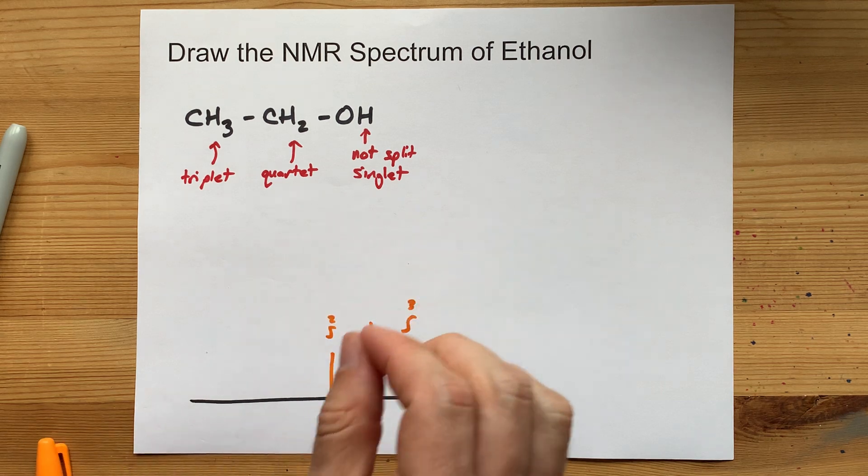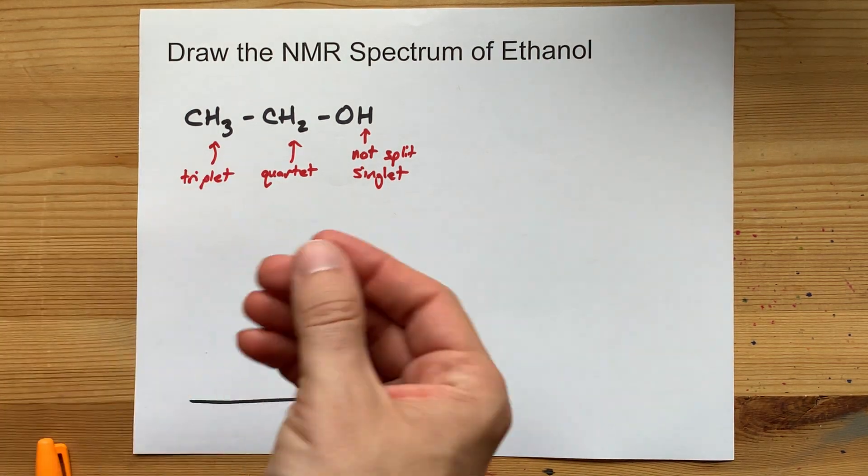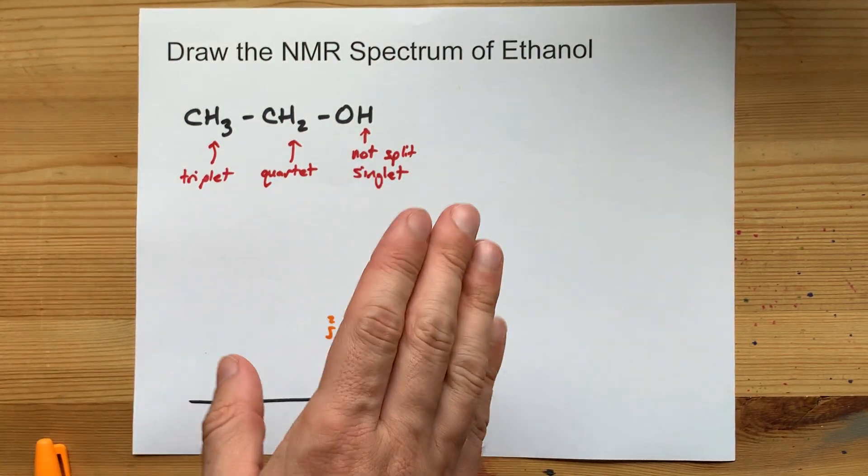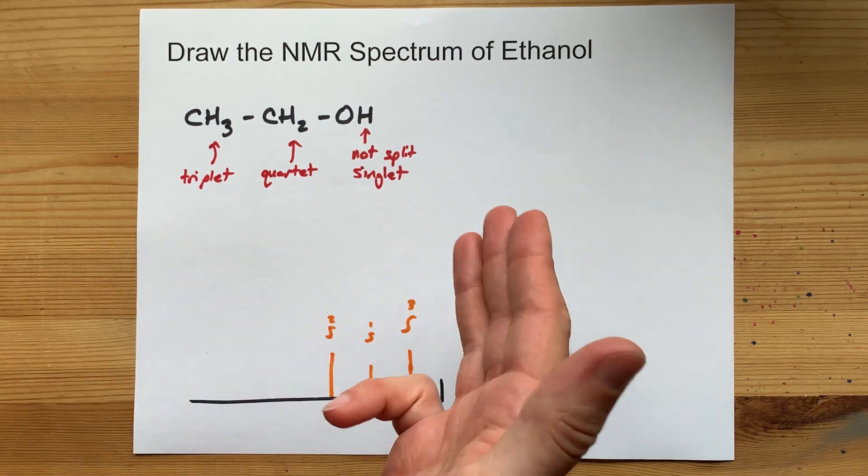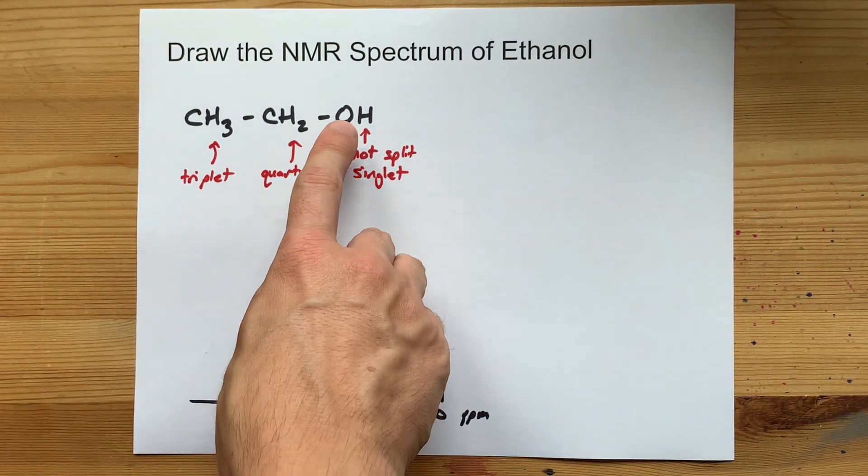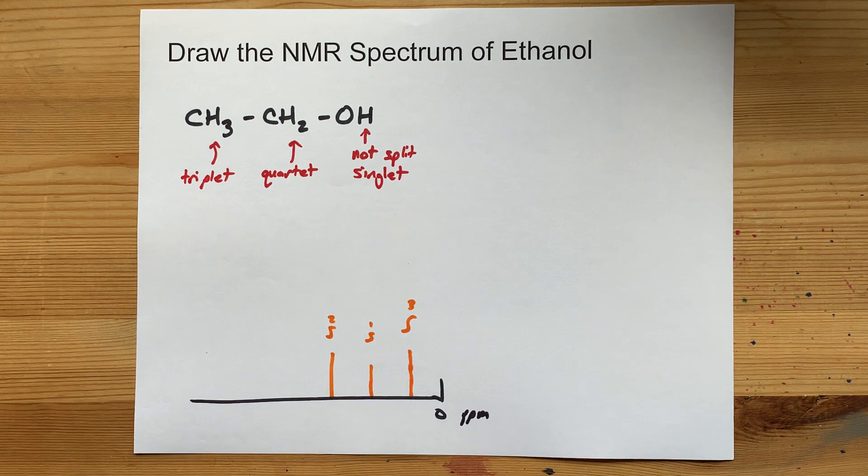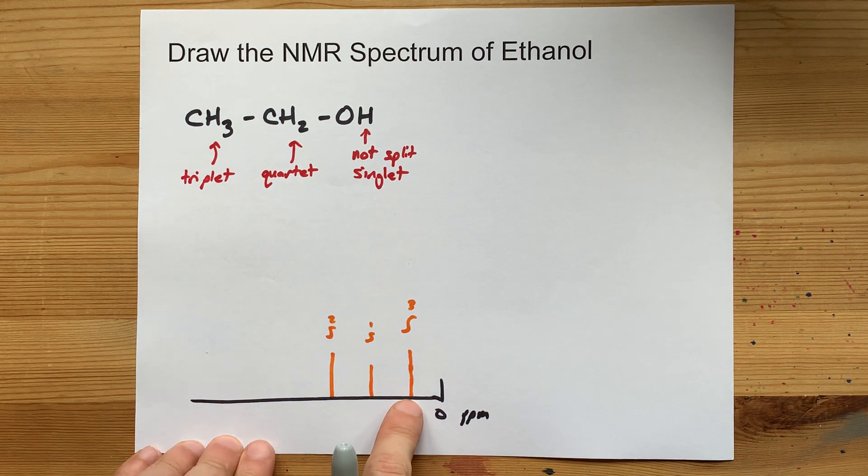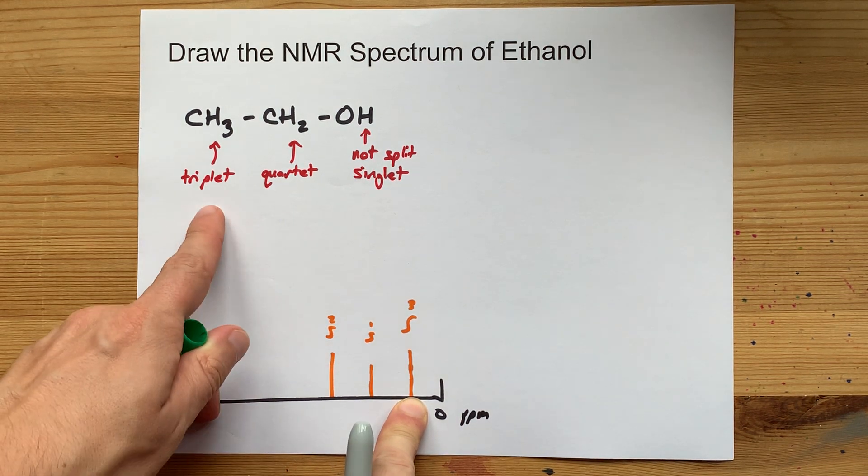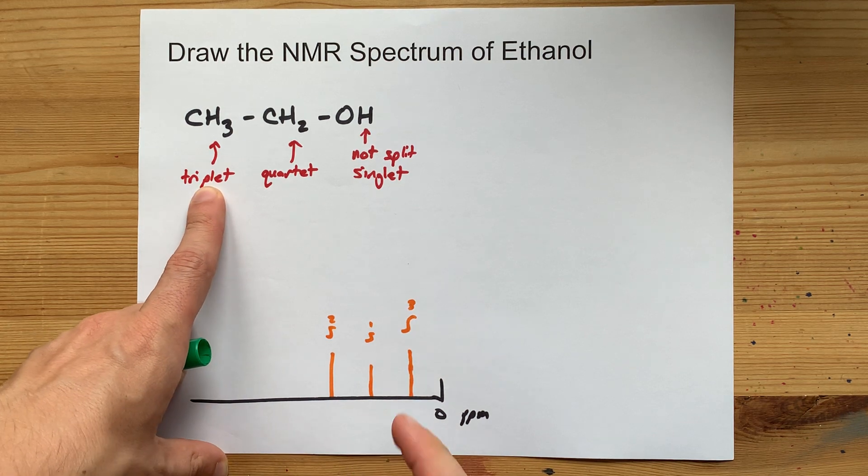But you probably came here for the splitting pattern. And again, you have to worry about the hydrogens that each one is adjacent to, not including the ones insulated by electronegative atoms. So these three hydrogens are split into a triplet.